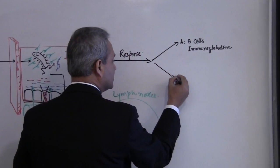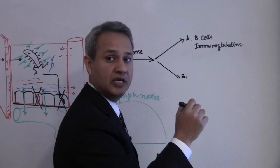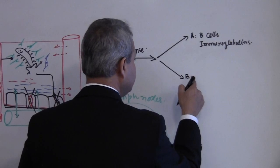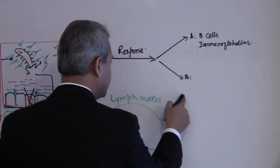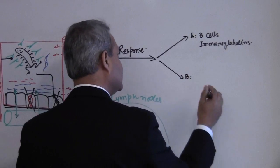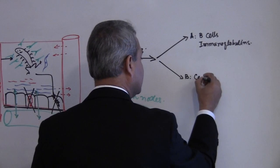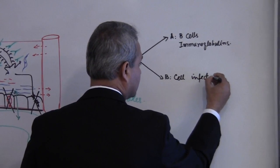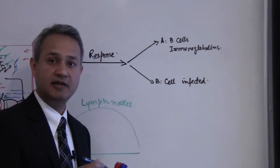The other response, the response type B, is where we would kill a cell which is infected. We will kill a cell which is infected.